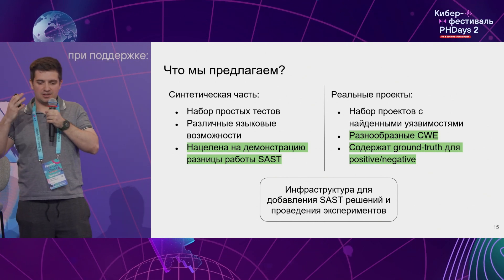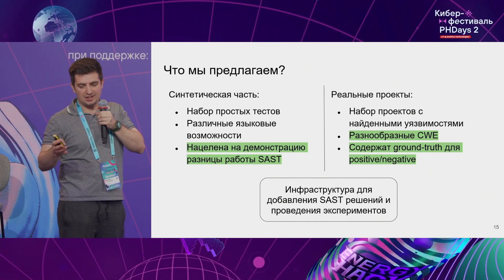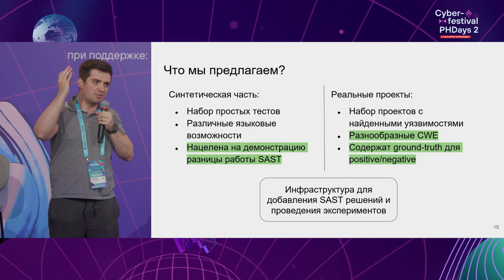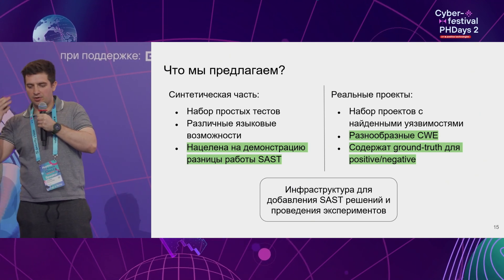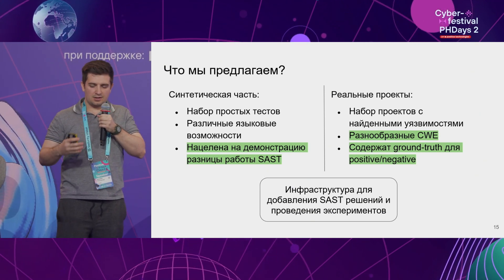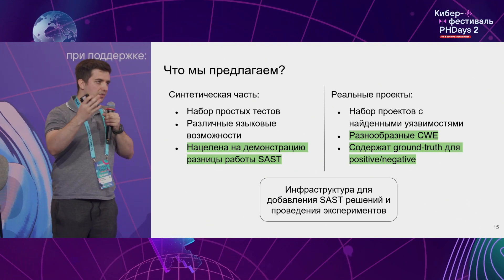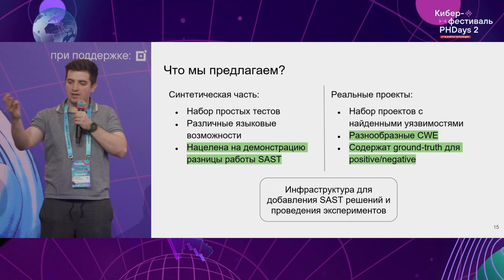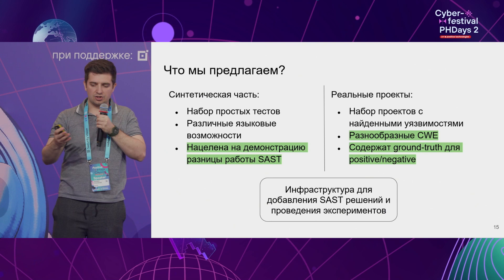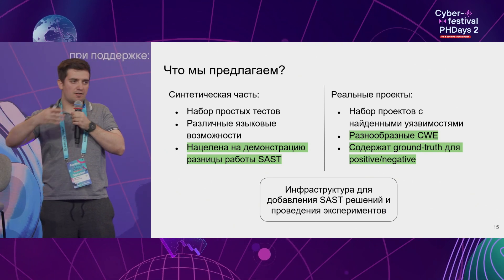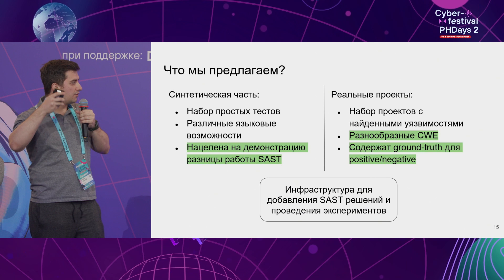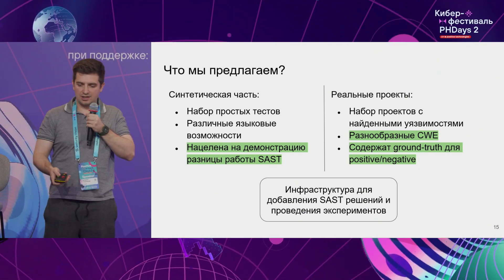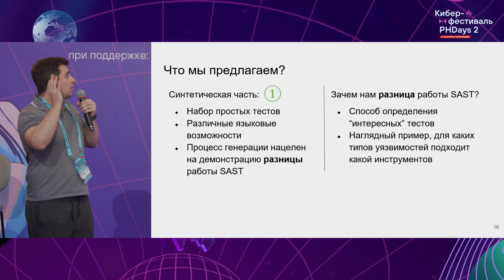We tried to make our benchmark closer to the perfect image showcased a few slides before. It has two components: the synthetic component, which relies on demonstrating the difference between SAST performance, and a set of real-life projects which actually includes various CWEs. There is a version that contains a vulnerability and another version with the vulnerability already fixed, so that we can run a false positive test. This features full-fledged infrastructure, which is easy to add your tool to and run experimental checks.